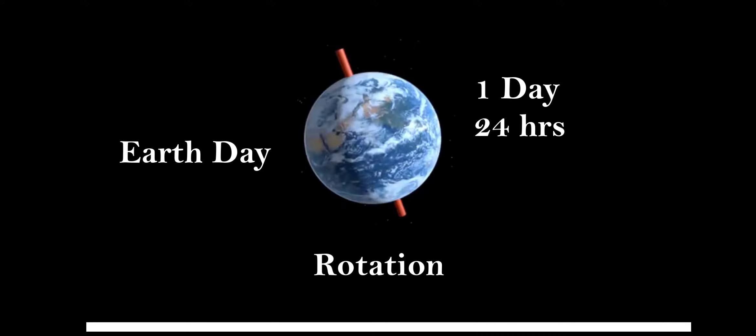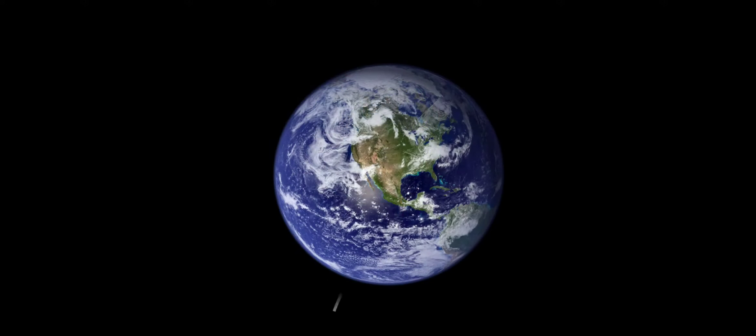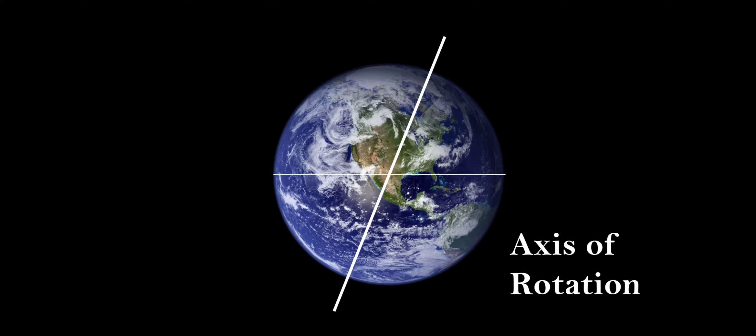The axis of earth is an imaginary line which makes an angle of 66.5 degrees from the horizontal line or the orbital plane line, and 23.5 degrees from the vertical line from the earth's orbital plane.